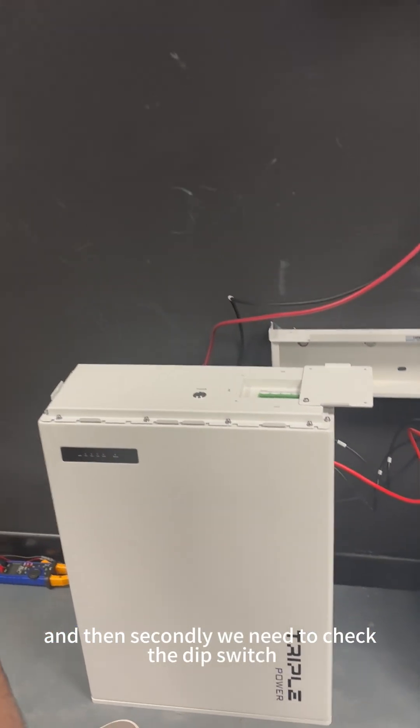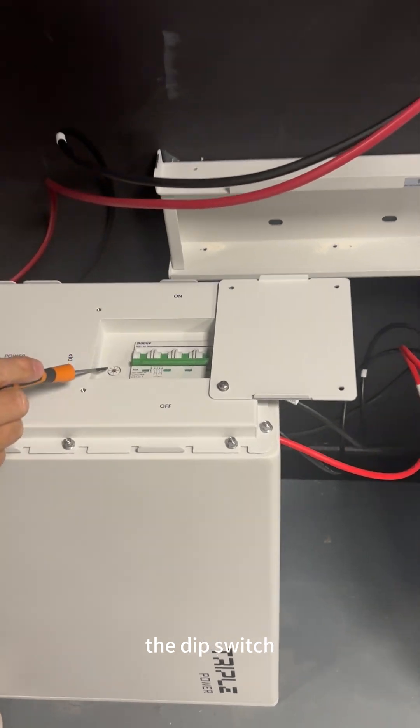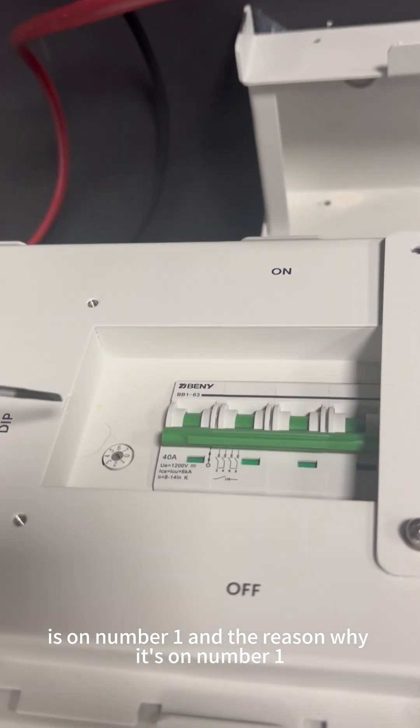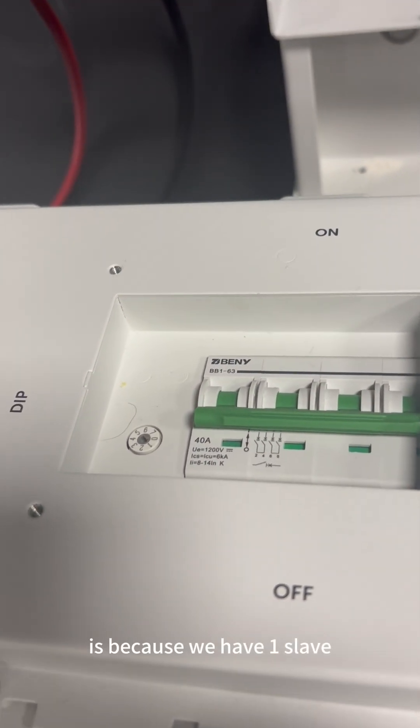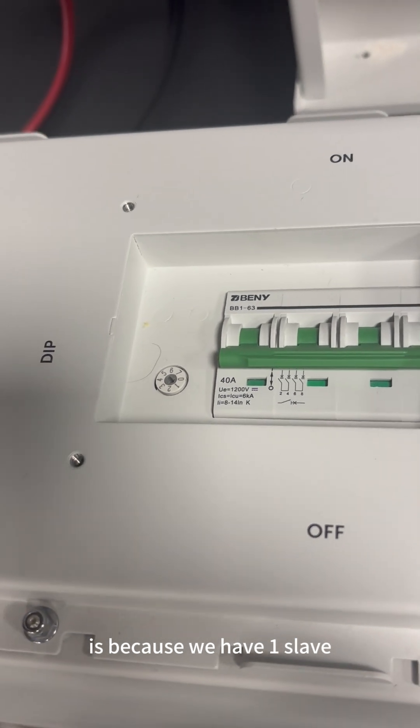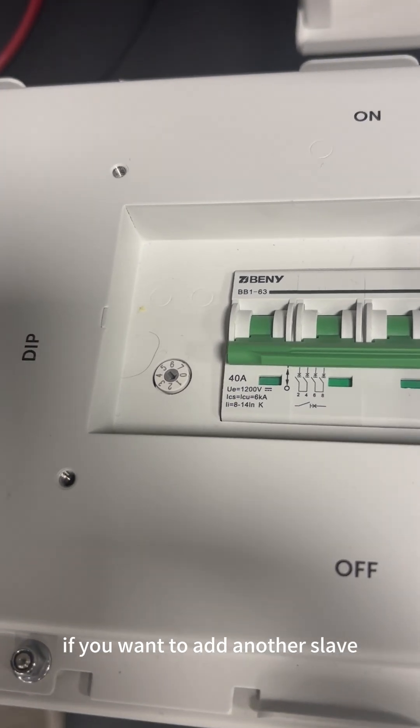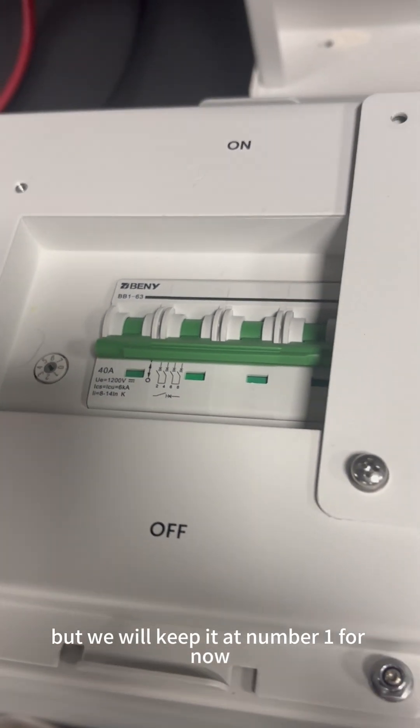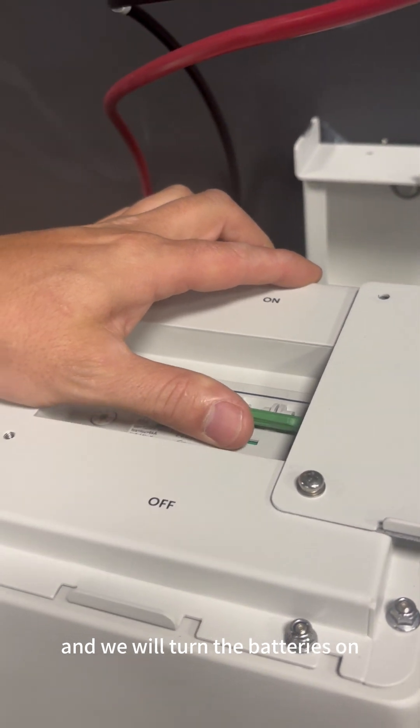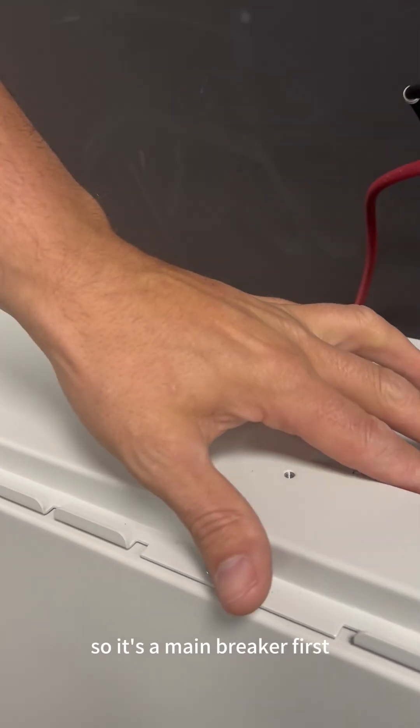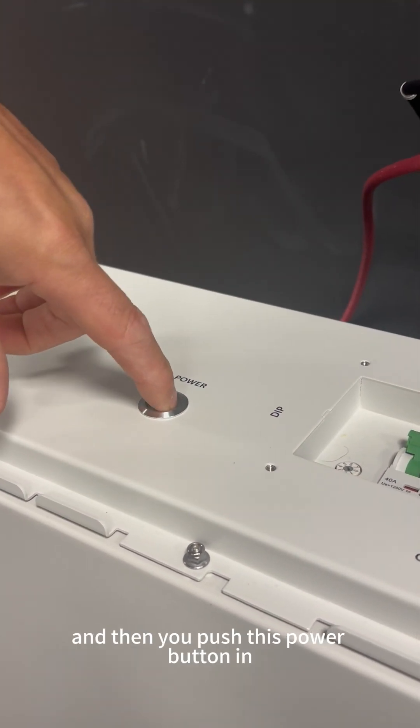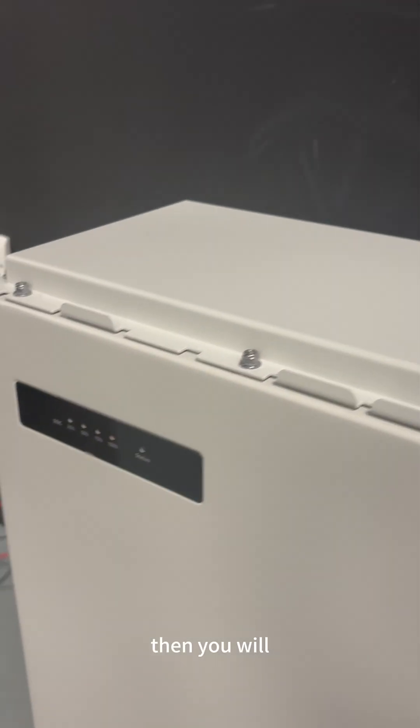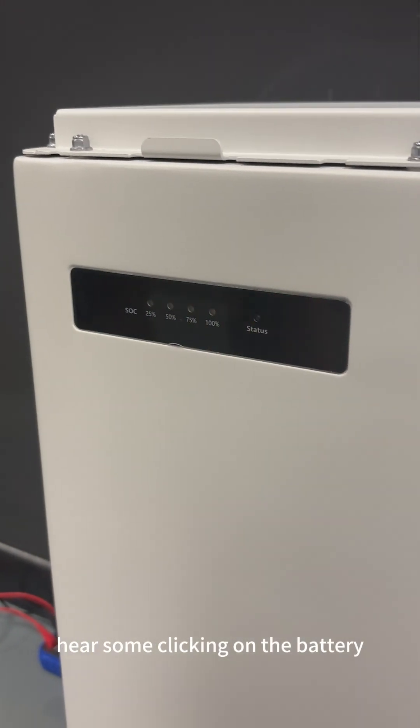The dip switch is on number one and the reason why it's on number one is because we have one slave. If you add another slave we need to change that to number two, but we will keep it at number one for now. We will turn the batteries on, so it's the main breaker first and then you push this power button in. Then you will hear some clicking on the battery and you'll see this light here flashing.